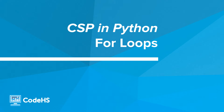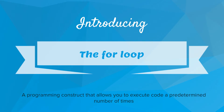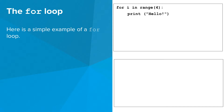Welcome back. In this video, you'll learn about one type of loop: the for loop. The for loop is a programming construct that allows us to execute code a predetermined number of times. Before picking apart exactly how the for loop works, let's look at a program that has a simple example of a for loop in it.